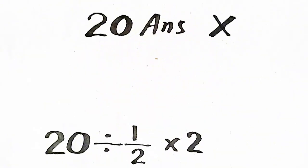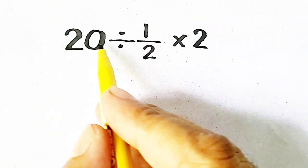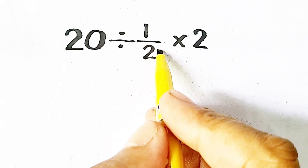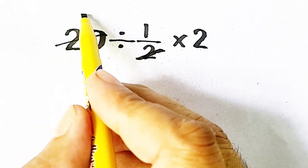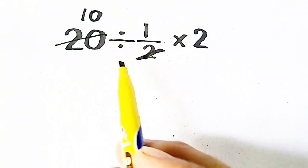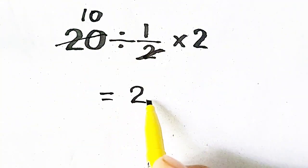So come to second method. We will divide 20 divided by half. So 2 and 20 are cancelled. So it will be 10 times 2. It will be 20.